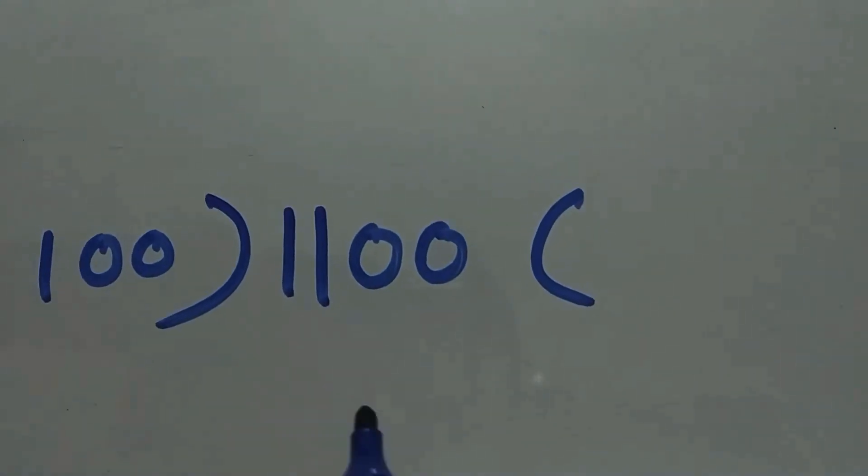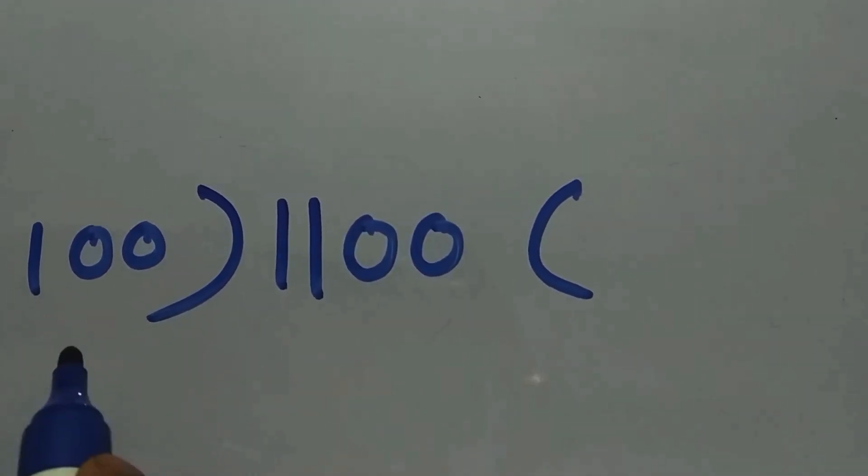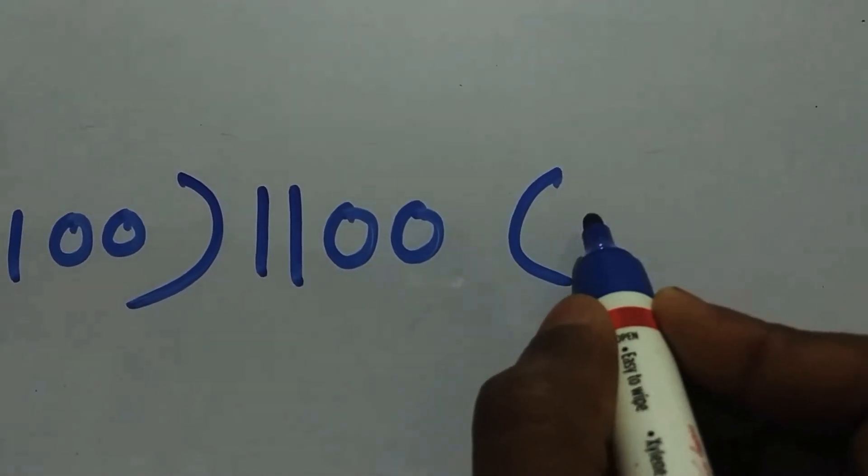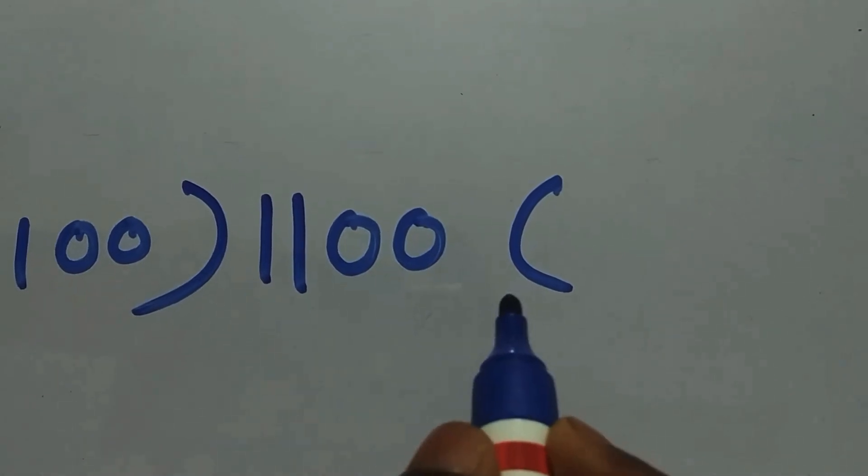So here's our example: 110 divided by 100. Now we need to multiply this value with certain values. The values can be 1 and 0 solely. In binary we have to multiply with 1 and 0 solely.